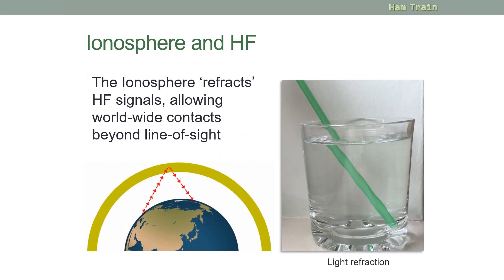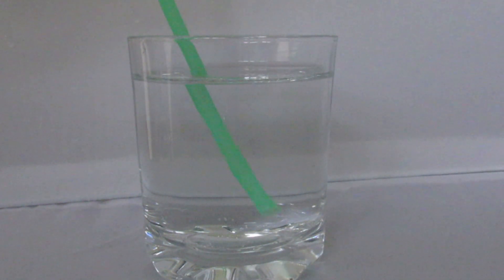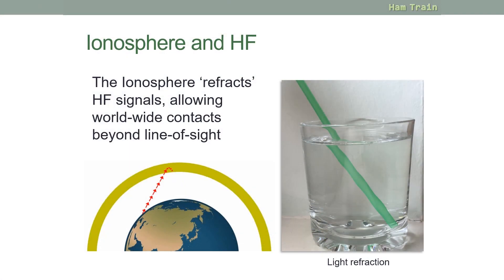Let's look at how the ionosphere affects HF radio propagation. The picture here of a straw in a glass should be a fairly familiar one — it shows light refraction. Similarly, the ionosphere refracts HF signals, allowing us to make worldwide contact. The image here shows a transmitter with the signal going up into the ionosphere and being refracted back down to the earth's surface.